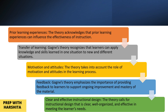Prior learning experience: this theory acknowledges that prior learning experience can influence the effectiveness of instruction. Meaning, if you have previously learned something, your previous experience will affect the instruction you are receiving. Transfer of learning: Gagné's theory recognizes that learners can apply knowledge and skills learned in one situation to new and different situations.